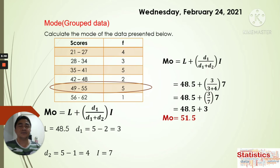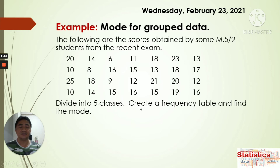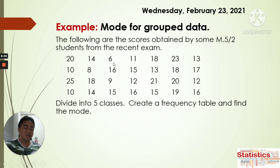Now we go to the next example. We have the scores obtained by some Grade 5-2 students from the recent exam. There are 28 students who took that exam. We're going to divide this into five classes, create a frequency table, and find the mode. The first step is to find the range — we need the maximum value and the minimum value. The maximum value is 25 and the minimum value is 6.